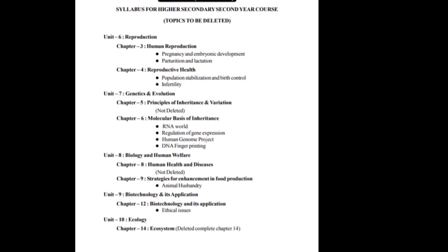Unit 7 has Genetics and Evolution, and in zoology Chapter 5 is 'Principles of Inheritance and Variation' — the main genetics chapter. It is not even touched, so the whole chapter will come in your examination. You have to study the genetics chapter in very detail.